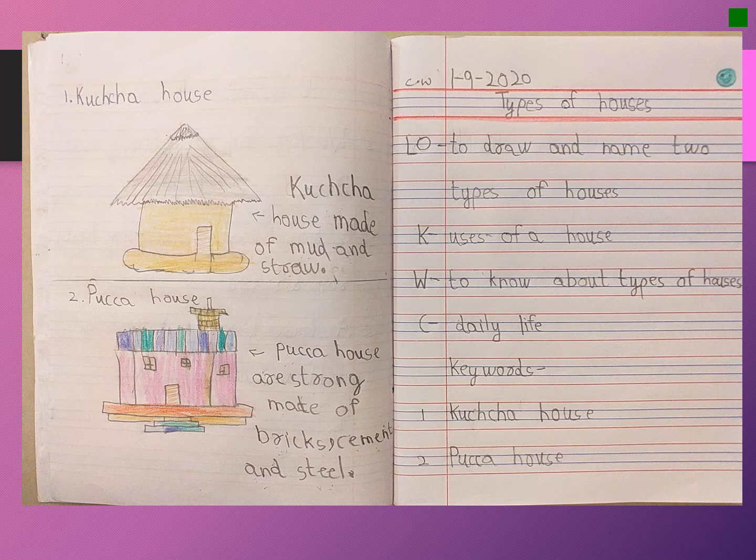So this is how your notebook is going to look — you will write the date, classwork, and the topic 'Types of Houses.' You will draw and name the two types of houses.